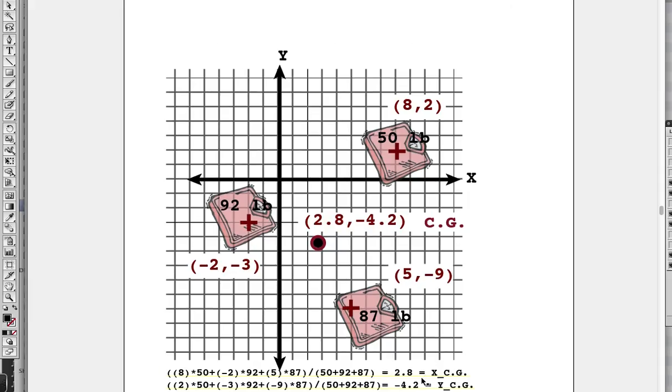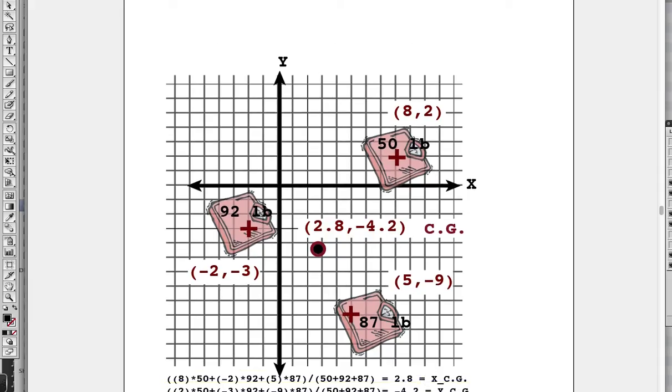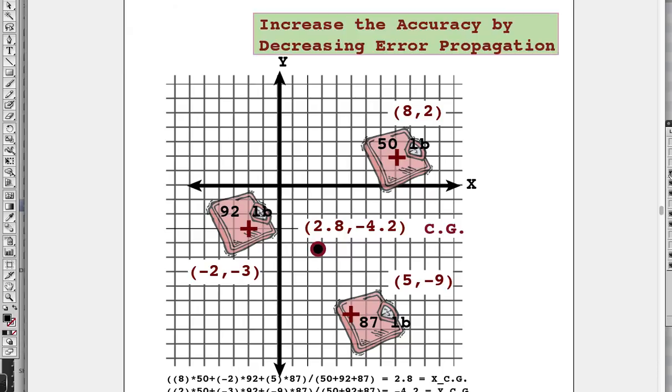Now how could we, if we're careful, increase the accuracy of our CG by decreasing the error propagation? Do you remember error propagation? Each of these coordinates has uncertainty with it. You can see this wheel was sitting right there with a plus sign—it's not quite on the grid crossing, so there's uncertainty in this measurement.